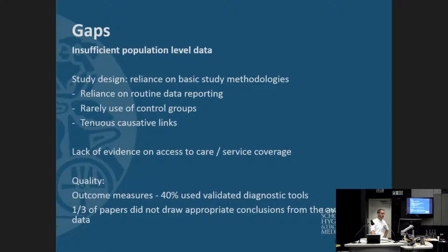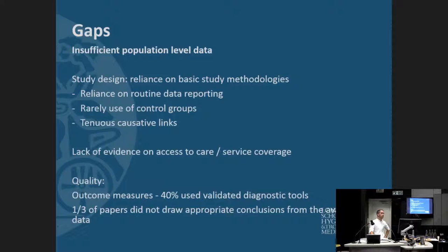Often some of these studies are making fairly tenuous causative links based on fairly poor quality data. There was one study in particular that looked retrospectively at data from the conflict in the Balkans and made some interesting correlations between the conflict and the incidence of right-sided colon cancer. Less than half of the papers are using validated diagnostic tools, and only one-third of the papers are making conclusions that we think they can really justify based on the data they have access to.